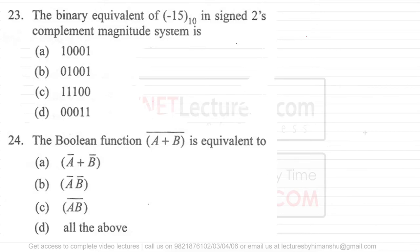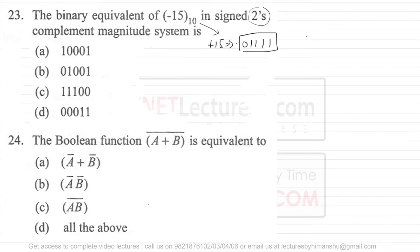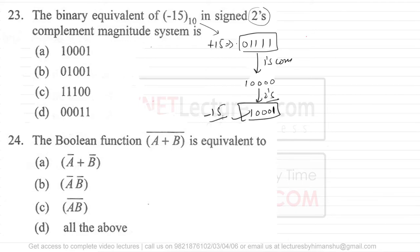Question 23 asks for the binary equivalent of minus 15 (base 10). To represent -15 in 2's complement we need 5 bits. First, +15 is represented as 0 1 1 1 1. To get -15, take the 2's complement: first find the 1's complement, which is 1 0 0 0 0, then add 1 to get 1 0 0 0 1. So 1 0 0 0 1 represents -15 in binary. The answer is option A.